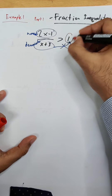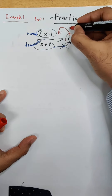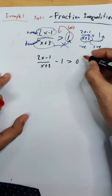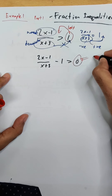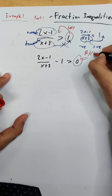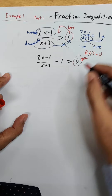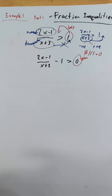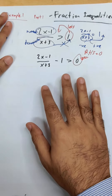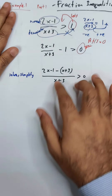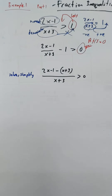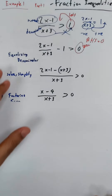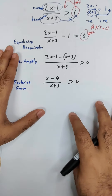The first step is to bring everything to the left side so the right-hand side equals zero. Once you've done that, you equalize the denominator and simplify it out.